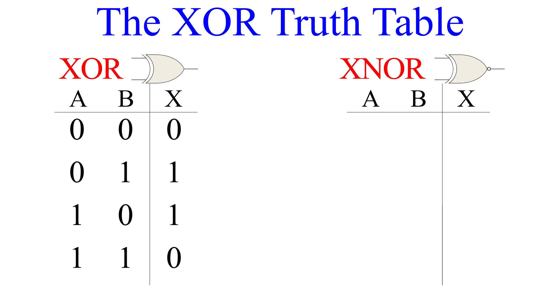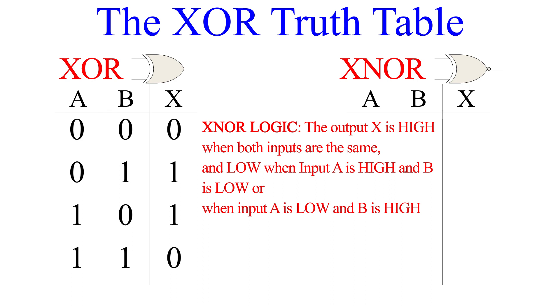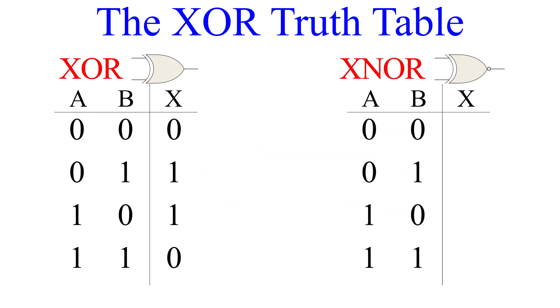X is low when input A is high and B is low, or when input A is low and B is high. So for input 0 and 0, the output is 1. For inputs 01 and 10, the output is 0. Finally, for inputs 1 and 1, the output is 1. The truth table of XNOR is the inverse of the truth table of XOR.